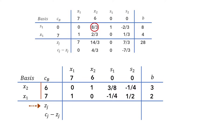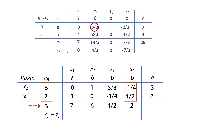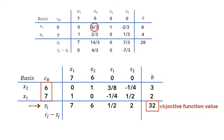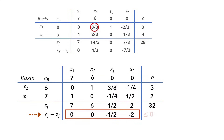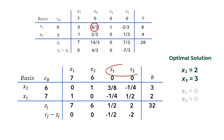Next, we calculate each zj value by multiplying the basic objective coefficients by the column entries and adding the results. 6 times 0 plus 7 times 1 equals 7. 6 times 1 plus 7 times 0 equals 6. 6 times 3/8 plus 7 times negative 1/4 equals 1/2. 6 times negative 1/4 plus 7 times 1/2 equals 2. For the B column: 6 times 3 plus 7 times 2 equals 32, the objective function value. For the net evaluation row: 7 minus 7 is 0, 6 minus 6 is 0, 0 minus 1/2 is negative 1/2, and 0 minus 2 is negative 2. Since all cj minus zj elements are non-positive, we can't improve on this solution — this is our optimal solution: x1 equals 2, x2 equals 3, s1 and s2 are 0 as non-basic, and the objective function value is 32.